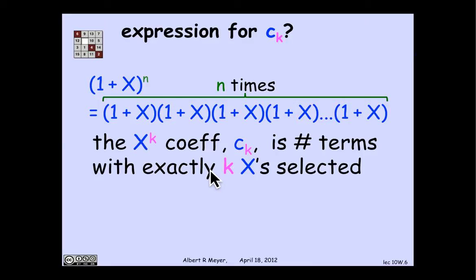The simple idea is: if you multiply out n terms, each of which is a sum of two things, you get 2ⁿ terms corresponding to every possible way of selecting one or the other component from each of the n factors. The coefficient of xᵏ is the number of those 2ⁿ terms in which the power of x is k — that is, in which we selected k x's and n minus k 1's. The number of ways to select k x's among n terms is n choose k, so ck = n choose k.